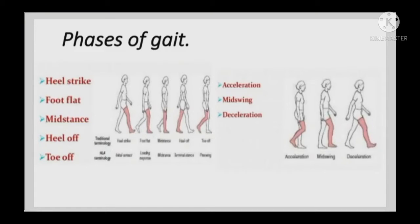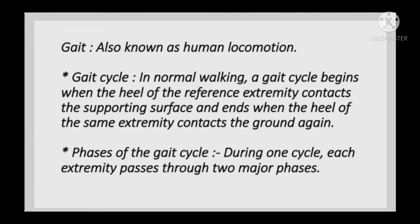Hello everyone. In this video we are going to talk about the phases of the gait cycle. Gait is also known as human locomotion. The gait cycle begins when the heel of the reference extremity contacts the supporting surface. For example, if I take my right leg as a reference, my gait cycle starts when the heel contacts the ground and ends when my right heel touches the ground again.